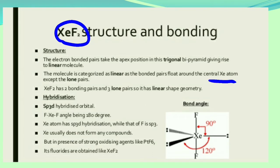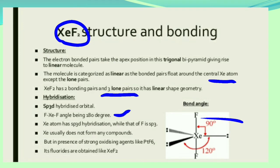XeF2 has two bonding pairs and three lone pairs, giving it a linear shape. This is important for your examination — questions may ask how many total electron pairs or lone pairs are present in XeF2, or ask about its shape in MCQs. Remember: XeF2 has a linear shape, three lone pairs, two bond pairs, sp3d hybridization, and an F-Xe-F bond angle of 180 degrees. The Xe atom has sp3d hybridization while F has sp3.